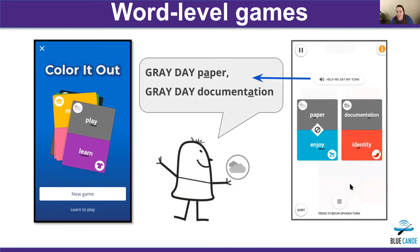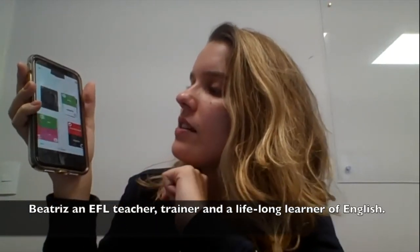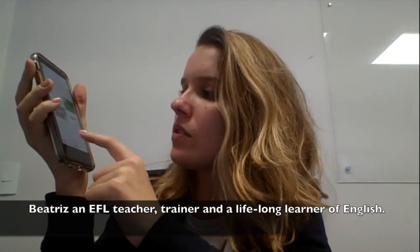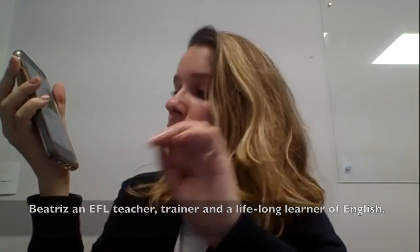When they're ready to play, they hit the record button and record themselves saying: Gray Day, paper — Gray Day, documentation. The feedback we provide gives information on the location of stress and the vowel quality at that moment. So that's my turn, and I have one that matches: White Tie, buy — White Tie, supplier. Let's see how well I did.